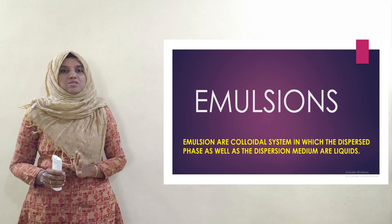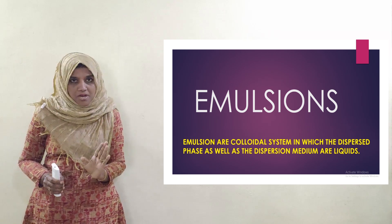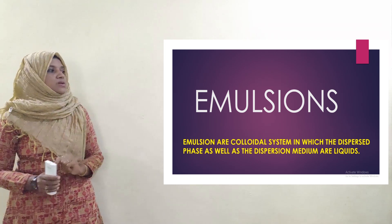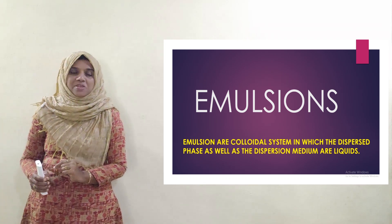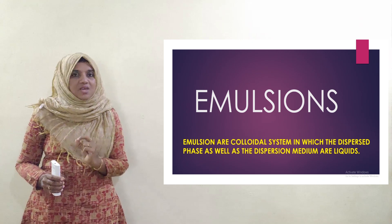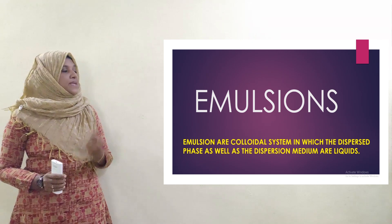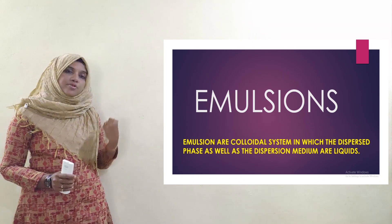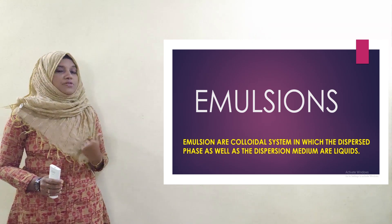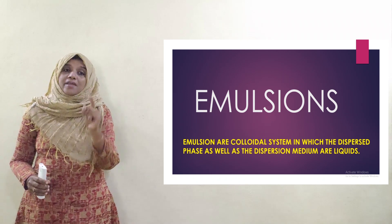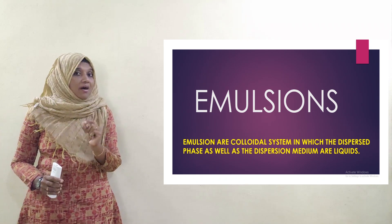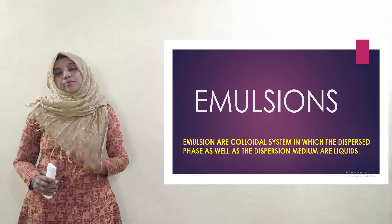Emulsion is a colloid system. Definition clear. Emulsions are a colloid system. Dispersion mediums are liquid.